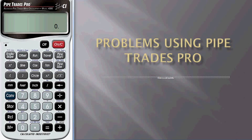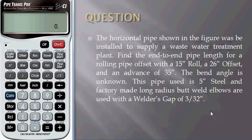Let's see the problems using Pipe Treads Pro. Coming to our question: the horizontal pipe shown in the figure was installed to supply a waste water treatment plant. Find the end to end pipe length for a rolling pipe offset with a 15 inch roll, a 26 inch offset, and an advance of 35 inch. The bend angle is unknown. This pipe used is 5 inch steel and factory made long radius butt weld elbows are used with a welder's gap of 3/32 inch.